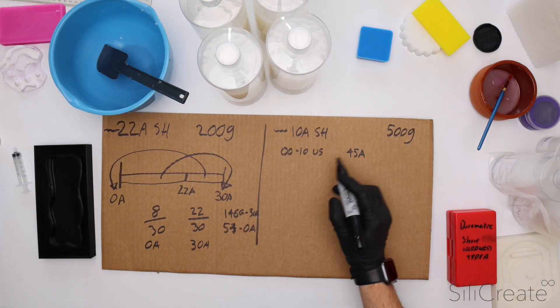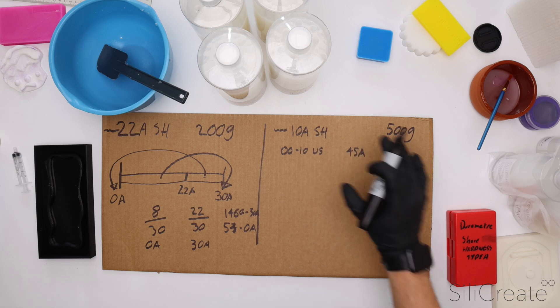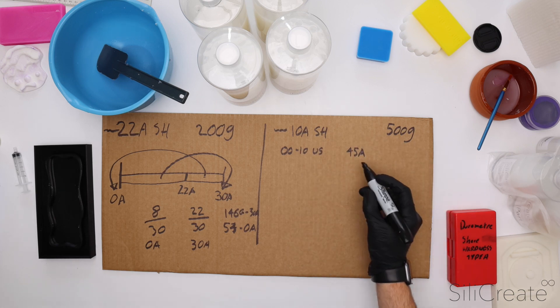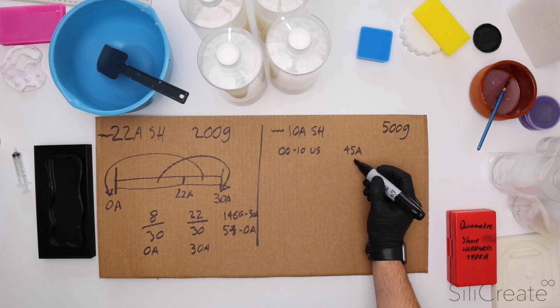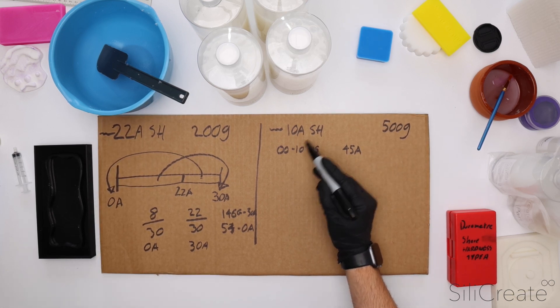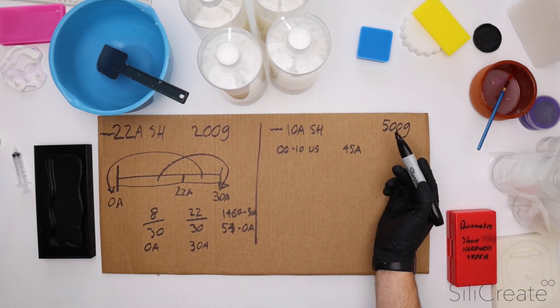So in order to do this we want to convert all of our shore hardnesses into the same scale. And so obviously we've got 0010. We'll convert 45A into the double zero scale and we'll convert 10A into the double zero scale.